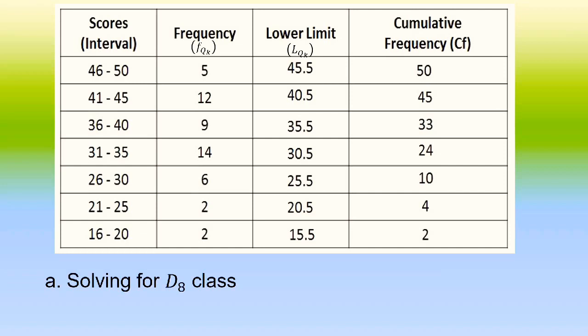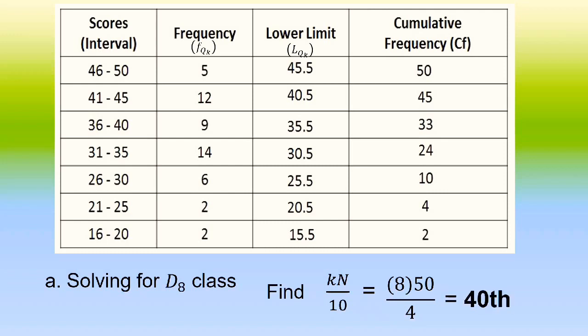To solve for the D sub 8 class, we use the formula K times N all over 10, which equals 8 times 50 divided by 10, so the value of the D sub 8 class is equal to 40. After identifying the D sub 8 class, we locate its position in our less-than cumulative frequency. The cumulative frequency must be greater than or equal to 40, and that falls in the class interval 41 to 45.